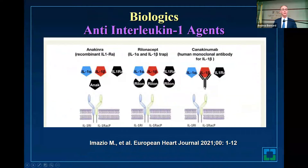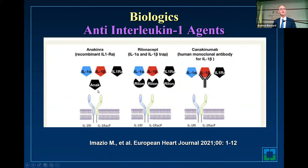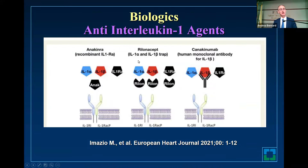What you really need to know is the differences between anakinra, which is a recombinant IL-1 receptor antagonist; rilonacept, which is an IL-1 alpha-beta trap; and canakinumab, which is a human monoclonal antibody for IL-1 beta.